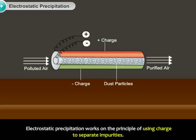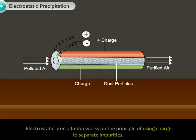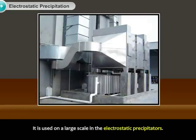Electrostatic precipitation works on the principle of using charge to separate impurities. It is used on a large scale in the electrostatic precipitators.